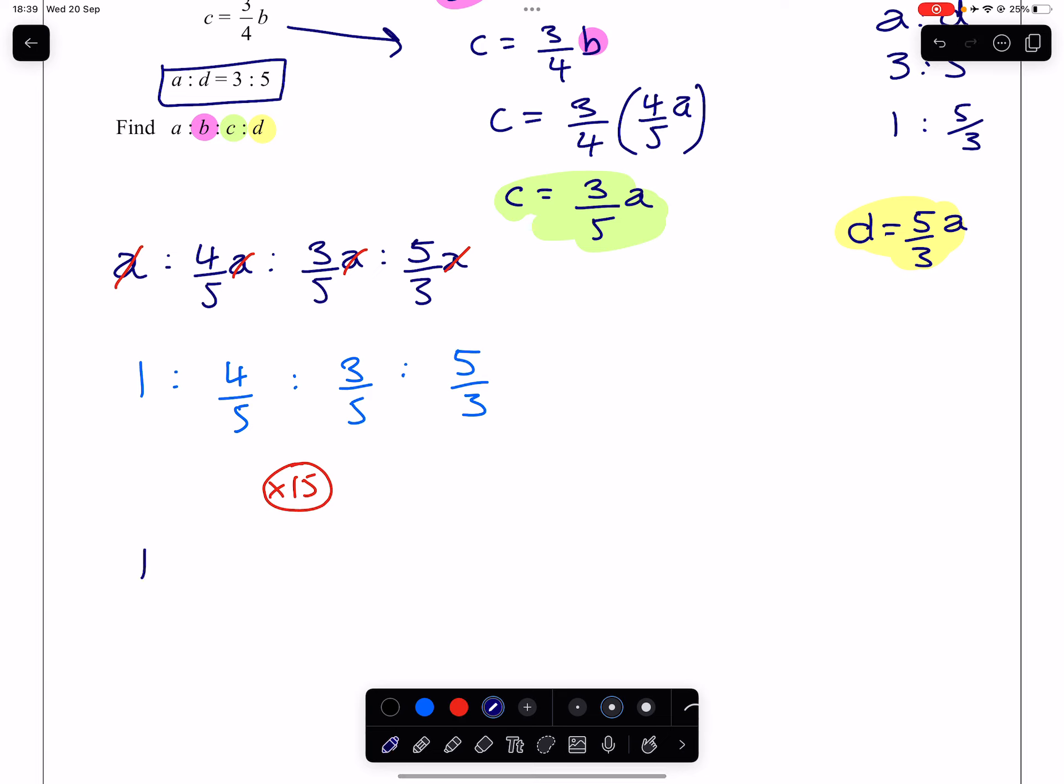One times 15 gives us 15. Four-fifths times 15 gives us 12. Three-fifths times 15 gives us 9. And five-thirds times 15 gives us 25. And that is our ratio.